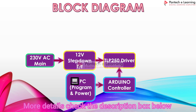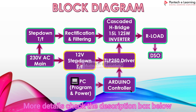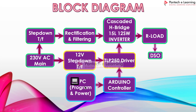Now let's see the basic block diagram. Here we have used an Arduino controller to generate the pulse from the controller, and by using the PC we can program it. The pulse generated from the controller unit is fed to the TLP 250 driver board. This TLP 250 driver board is going to isolate and amplify the pulse generated from the controller unit, and it is fed to the power devices used in the H-bridge 15-level inverter. This TLP 250 driver board is powered by a 12-volt step-down transformer, and for the main power circuit, the input DC voltage is derived from a step-down transformer — that AC input voltage is rectified and filtered and fed to the inverter circuit.